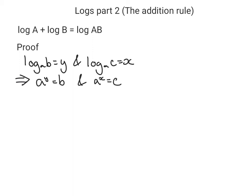Now let's multiply one equation by the other, and we get a to the y multiplied by a to the x equals bc. So using the multiplication rule for indices, we get a to the x plus y equals bc.